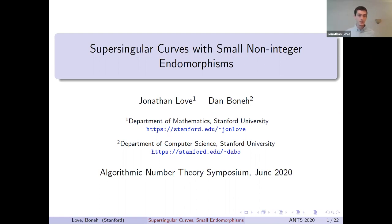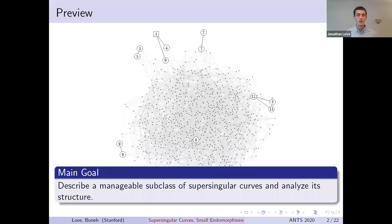We will be exploring the collection of supersingular elliptic curves, which can be a very large, complicated, and mysterious set. Our main goal is to describe a nice, easily accessible subclass of the set of all supersingular curves and analyze its structure. One notable feature of the curves in this set is that we can find isogenies between them that can't reasonably be found by searching on l-isogeny graphs alone, and this may have applications in isogeny-based cryptography.